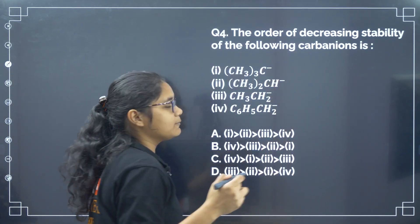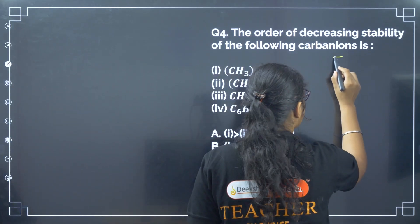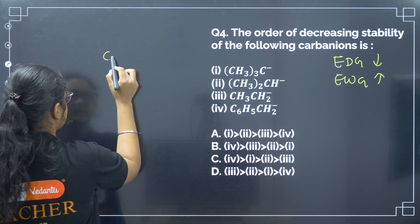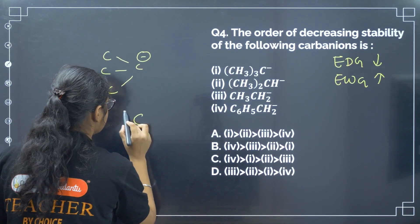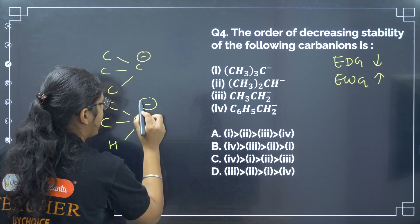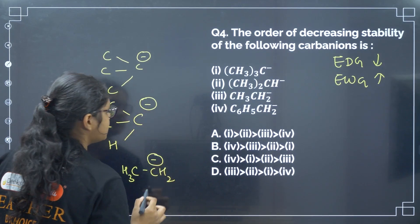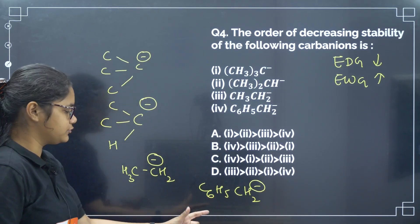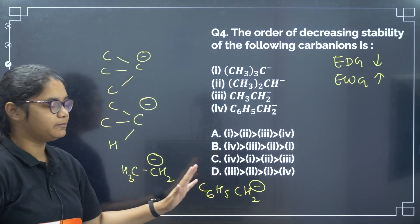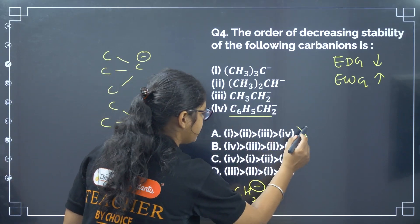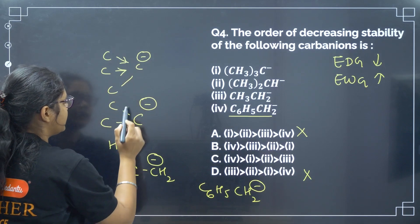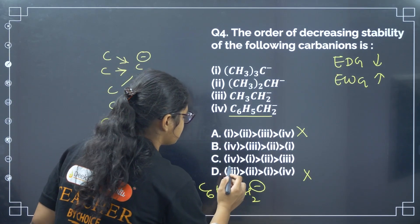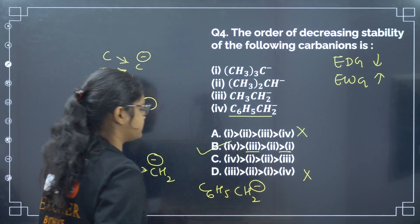The correct order of decreasing stability of the following carbanions: if there is an electron donating group, it will decrease the stability; electron withdrawing groups will increase the stability. C6H5-CH2⁻ can withdraw the negative charge by resonance, so it is the most stable — that is fourth. We can eliminate options A and B. Three methyl groups donate, two donate, one donates, so after fourth we have 3, then 2, then 1. Correct answer is option number B.